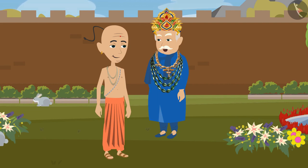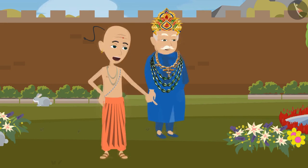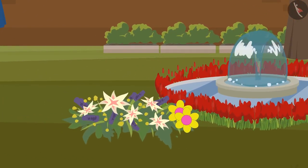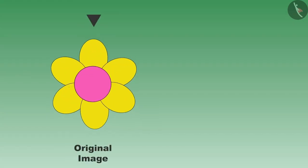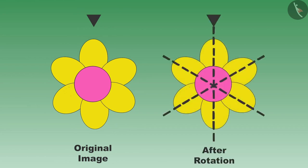'Is there some image around us that will remain the same even after one-sixth rotation?' 'Sure, my lord, let me search. Sir, please have a look at this flower very carefully. This flower has six parts.